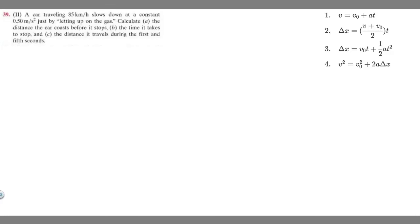In this problem, a car traveling 85 kilometers per hour slows down at a constant 0.5 meters per second squared just by letting up on the gas. We're told to calculate a few things: first, the distance the car goes before it stops; second, the time it takes to stop; and third, the distance it travels during the first and fifth seconds.